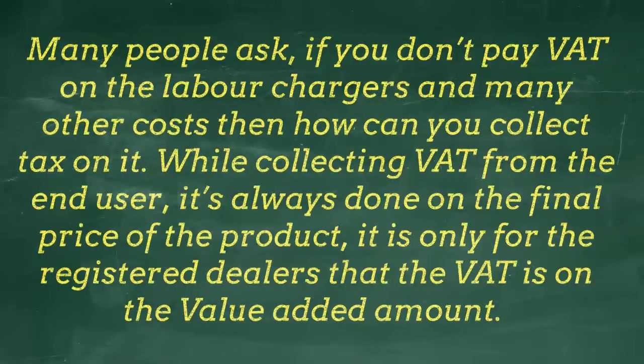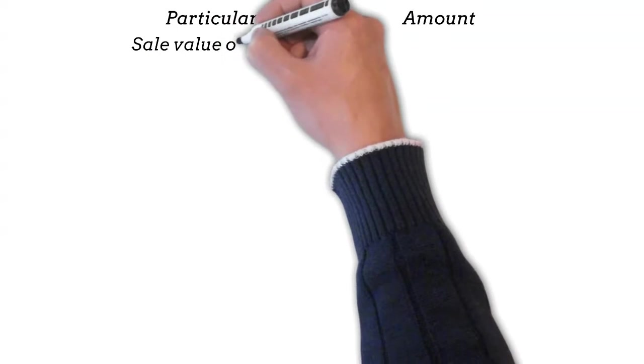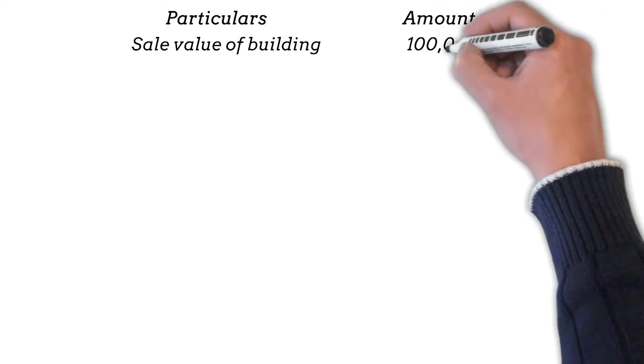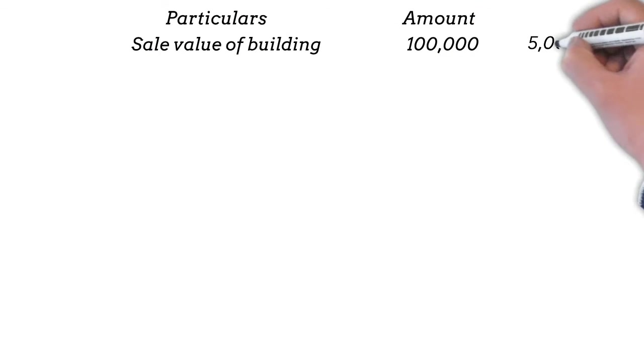Let us see this with some figures. A builder sells a commercial building for 100,000 and collects 5% VAT of 5,000.